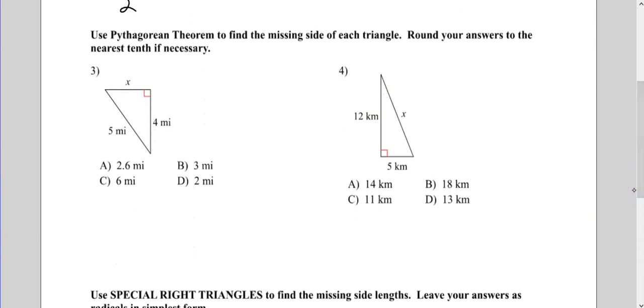Pythagorean theorem. The key is always identify where the hypotenuse is — that's going to be our C. The Pythagorean theorem is A squared plus B squared equals C squared. It's not a bad idea to write that at the beginning of these problems and then just fill in what you have.